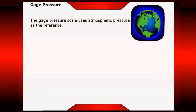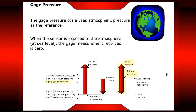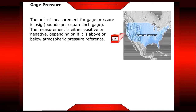Gauge pressure. The gauge pressure scale uses atmospheric pressure as the reference. When the sensor is exposed to the atmosphere at sea level, the gauge measurement recorded is zero. The unit of measurement for gauge pressure is pounds per square inch gauge. The measurement is either positive or negative, depending on whether it is above or below the atmospheric pressure reference.